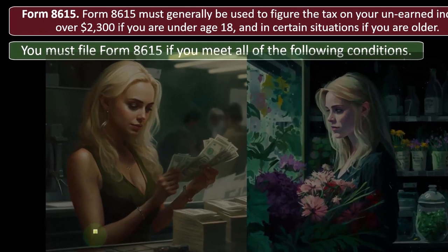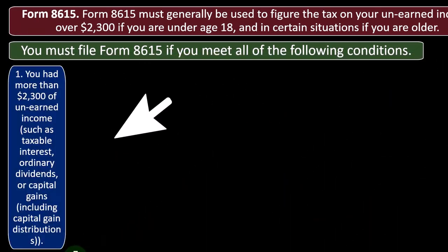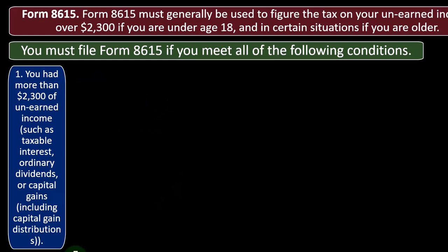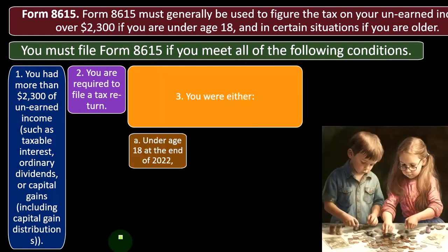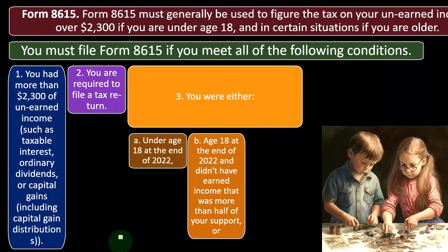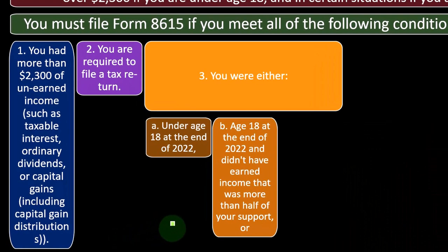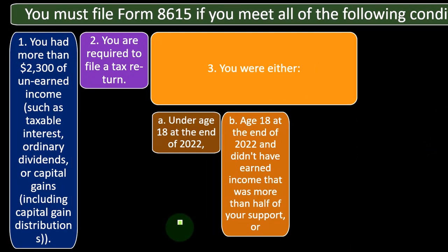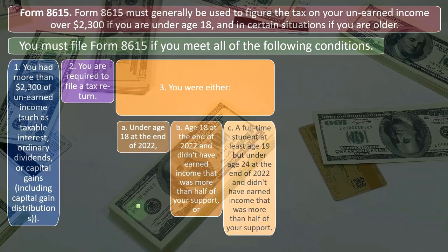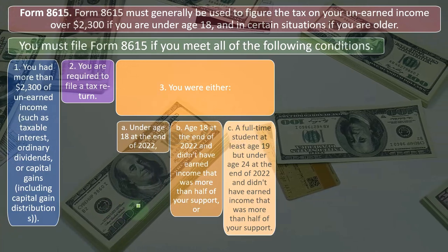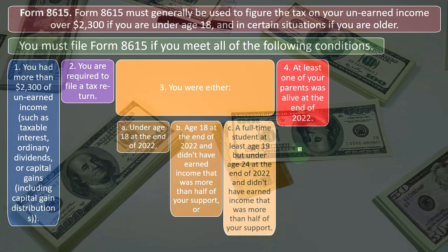You must file Form 8615 if you meet all the following conditions: one, you had more than $2,300 of unearned income such as taxable interest, ordinary dividends, or capital gains including capital gain distributions; two, you are required to file a tax return; three, you are either (A) under age 18 at the end of 2022, (B) age 18 at the end of 2022 and didn't have earned income that was more than half of your support, or (C) a full-time student at least age 19 but under 24 at the end of 2022 and didn't have earned income that was more than half your support. These mirror some of the dependency requirements to be a dependent of someone else.